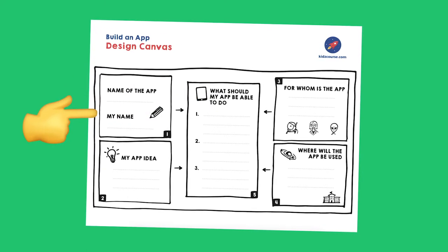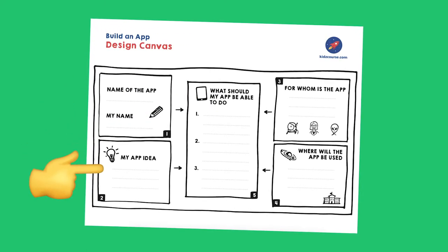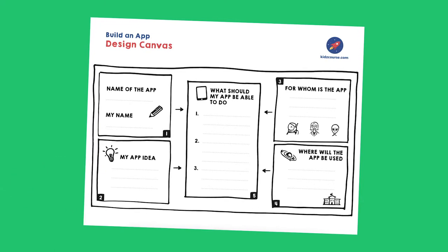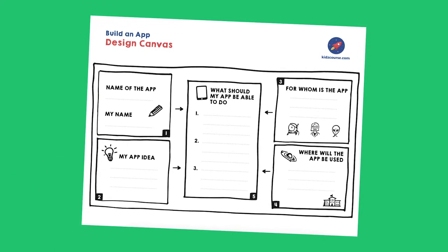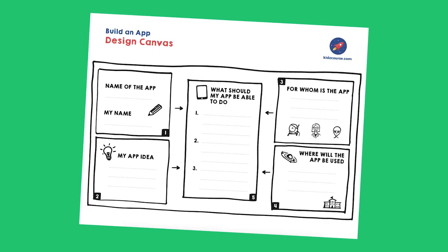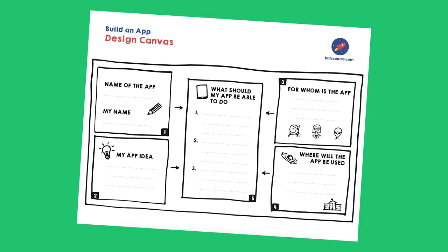We start with the two parts on the left. In a minute, pause this video again and think of what app you would like to make. If you've come up with an idea and a name, write them down right away. You can also write down your own name immediately. If you're done, press play again and we'll continue.